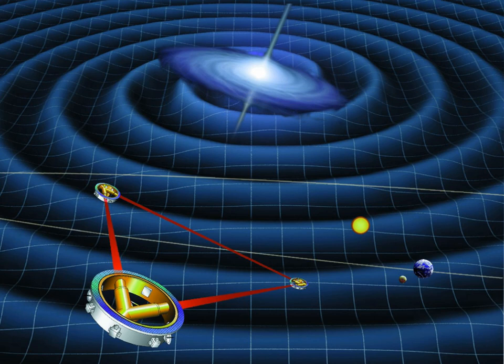LISA will also search for currently unknown sources of gravitational waves. The history of astrophysics has shown that whenever a new frequency range or medium of detection is available, new unexpected sources show up. This could, for example, include kinks and cusps in cosmic strings.